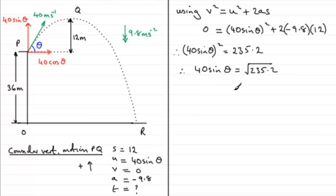If we do that, we'll just divide by 40 and we get therefore sine theta equals the root of 235.2 divided by 40. We'll do all the calculations in one go. So if we inverse sine both sides, theta equals the inverse sine of the root of 235.2 all divided by 40.